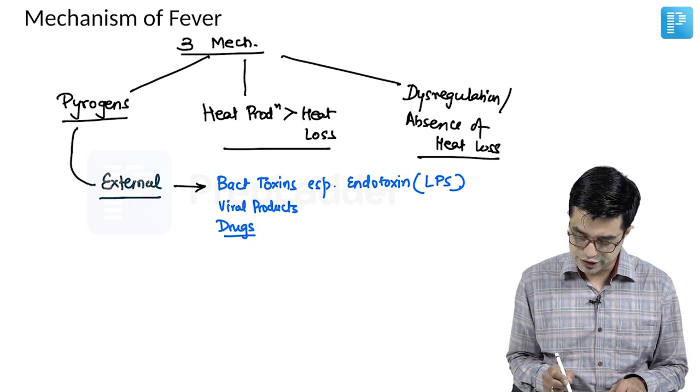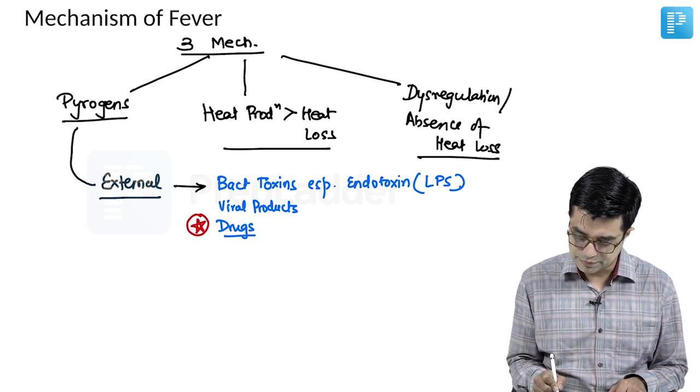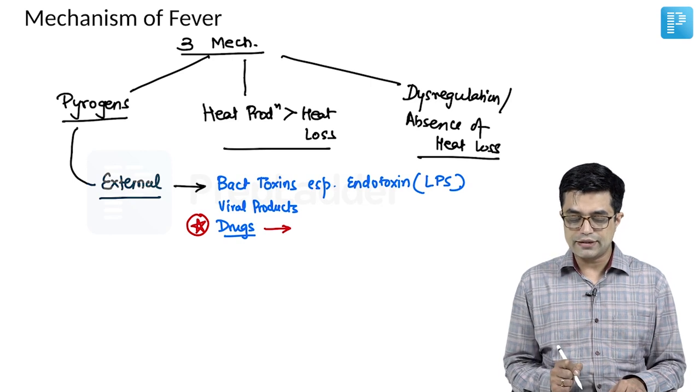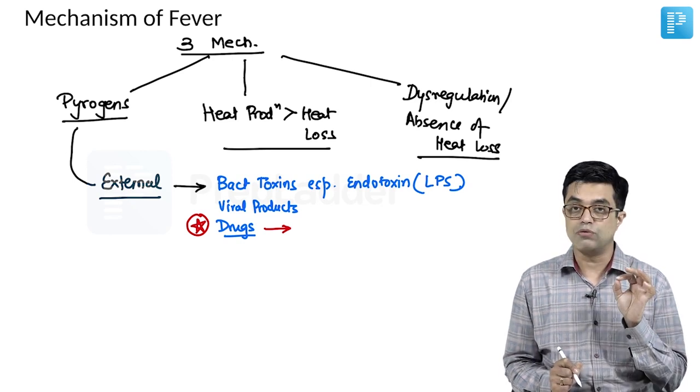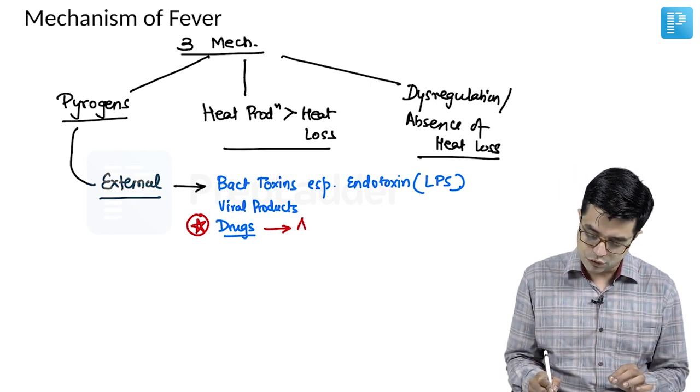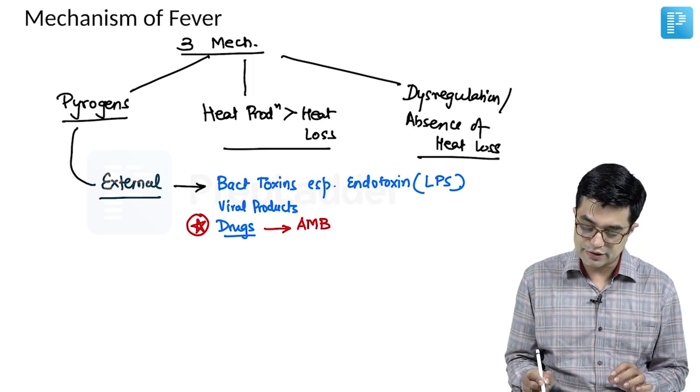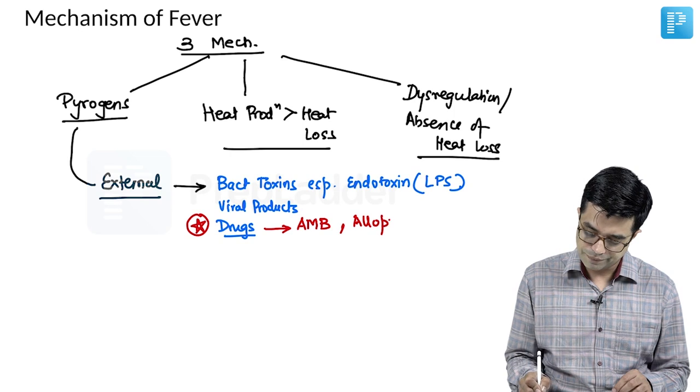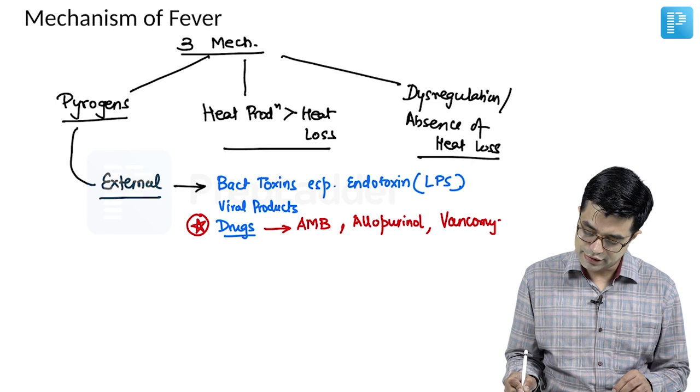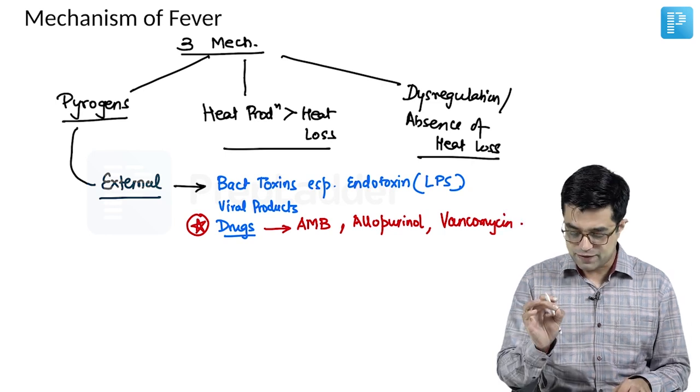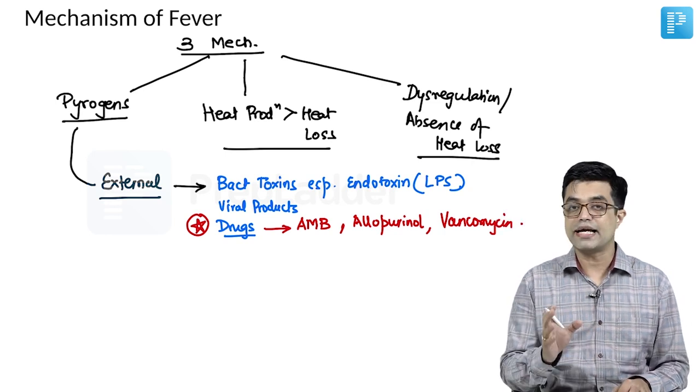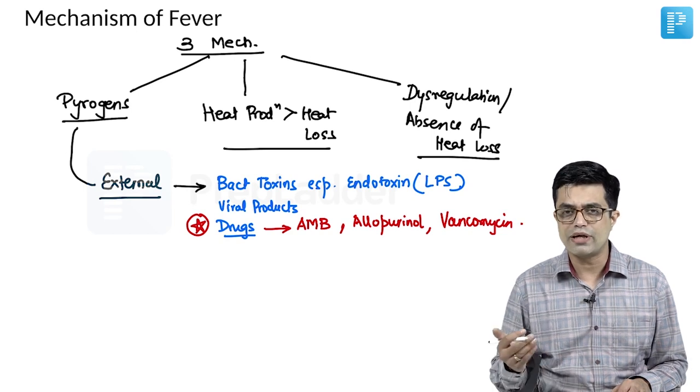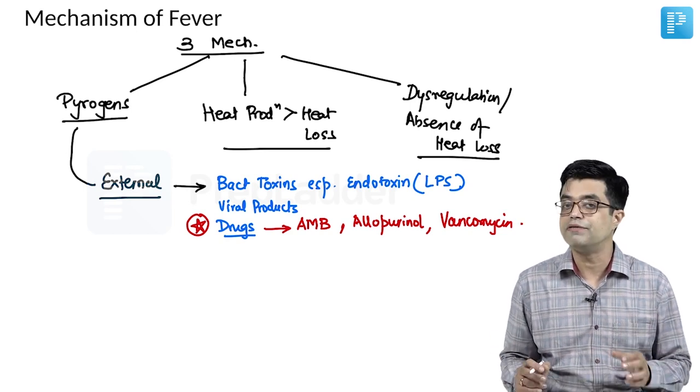Now, potential MCQ: what are the three important drugs which have a tendency, which are strong pyrogenic influence? First is amphotericin B. All the three drugs are mentioned in Nelson. Second is allopurinol. And third is vancomycin. So, these are the three drugs which are implicated in children, where they act as external pyrogens and can lead to fever. They are the ones which are often associated with drug fever as well.